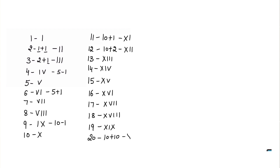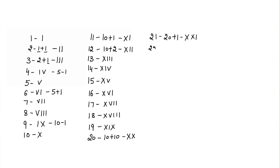20 is 10 plus 10, so we use X for one 10 and X for another 10, giving us XX. Similarly, 21 is 20 plus 1 — since 20 is XX, we write XXI.